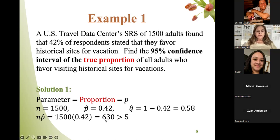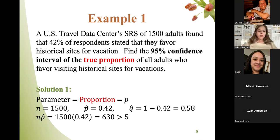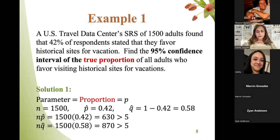Checking our conditions: N times P-hat is 1,500 times 0.42 equals 630, which is bigger than 5. N times Q-hat is 1,500 times 0.58 equals 870, which is also larger than 5. Our conditions are satisfied, and we have a simple random sample, so we are good to proceed.